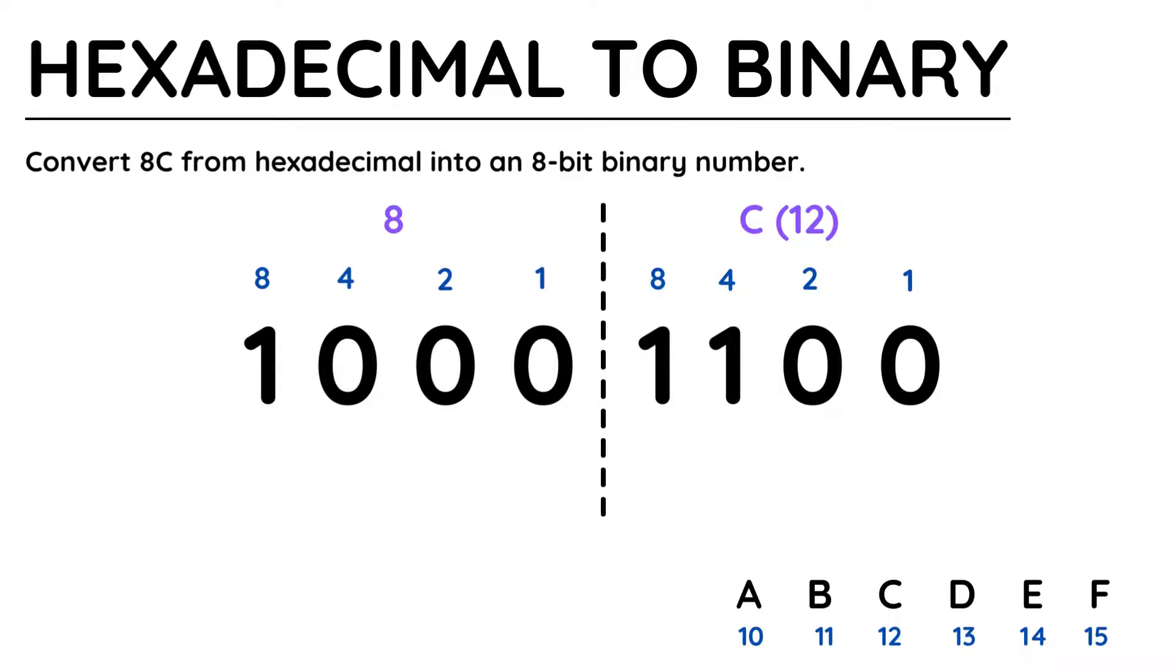Representing 12 is also quite straightforward as it is 8 plus 4, so it's a 1 beneath those values and a 0 beneath the 2 and the 1.